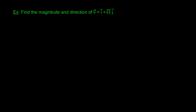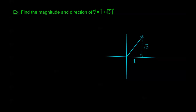So given V equals I plus √3 J, let's draw a triangle. If I have this vector V in standard position with its vertex at the origin, this component form 1I plus √3 J tells me that the base of the triangle is 1, the vertical side is √3, theta is the direction angle, and the magnitude of V is the hypotenuse. The magnitude of V equals √(A² + B²), which is very similar to our formula for the modulus of a complex number.